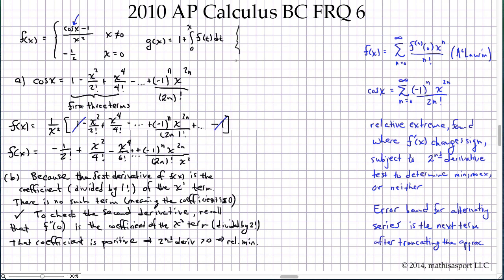Part c wants the fifth degree Taylor polynomial for g about x equals 0. We know g of x is 1 plus the integral from 0 to x of f(t) dt. We can just substitute in what f(t) is: g(x) equals 1 plus integral from 0 to x of negative 1 half plus t squared over 4 factorial minus t to the 4th over 6 factorial, and so on. Now we'll integrate term by term.